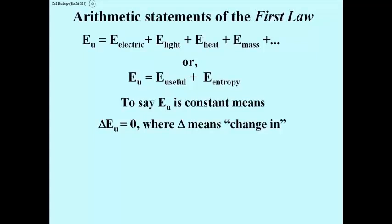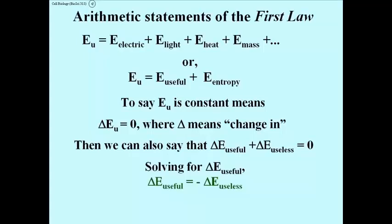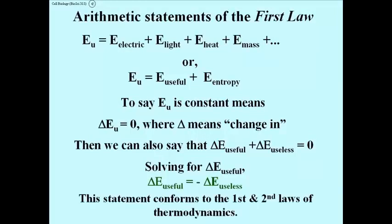The Greek letter delta, as you probably know, just means change in. So when you see it in front of some term, it means change in that term. We can also say then that the sum of the change in useful energy and the change in useless energy must also equal zero. That comes from the second equation near the top of this slide. If we do that, then we can solve for the change in useful energy. And that's shown in green right here. The change in useful energy is equal to minus the change in useless energy. This statement conforms to both the first and the second law of thermodynamics. And what is interesting about it is that it establishes or states a reciprocal relationship between the two quantities.